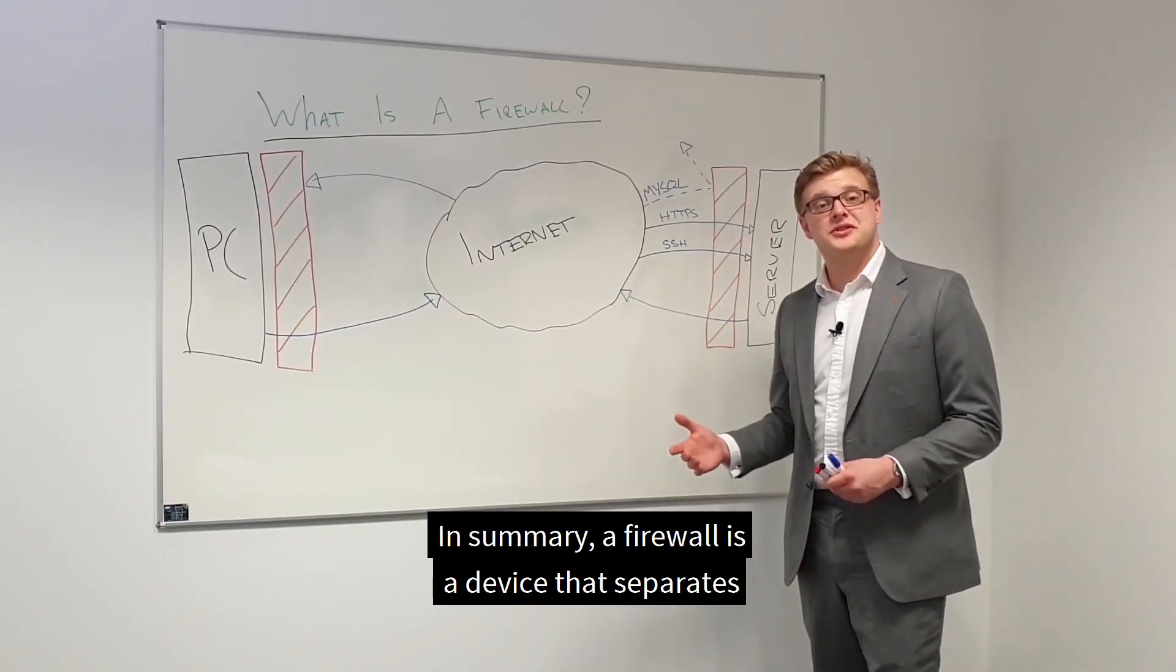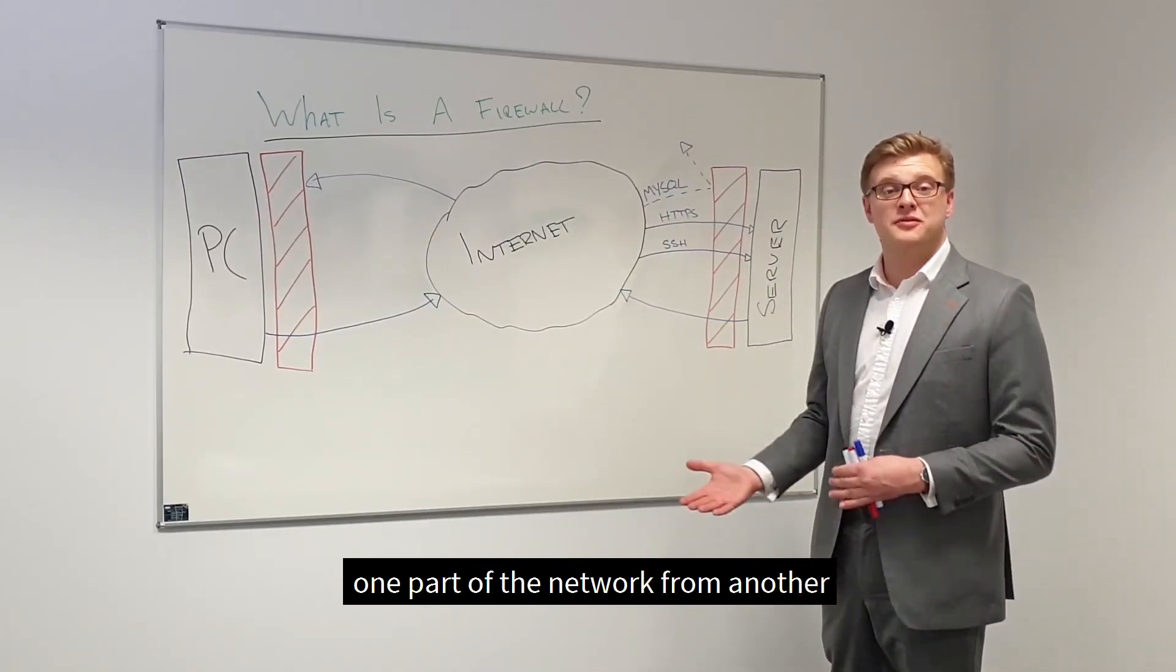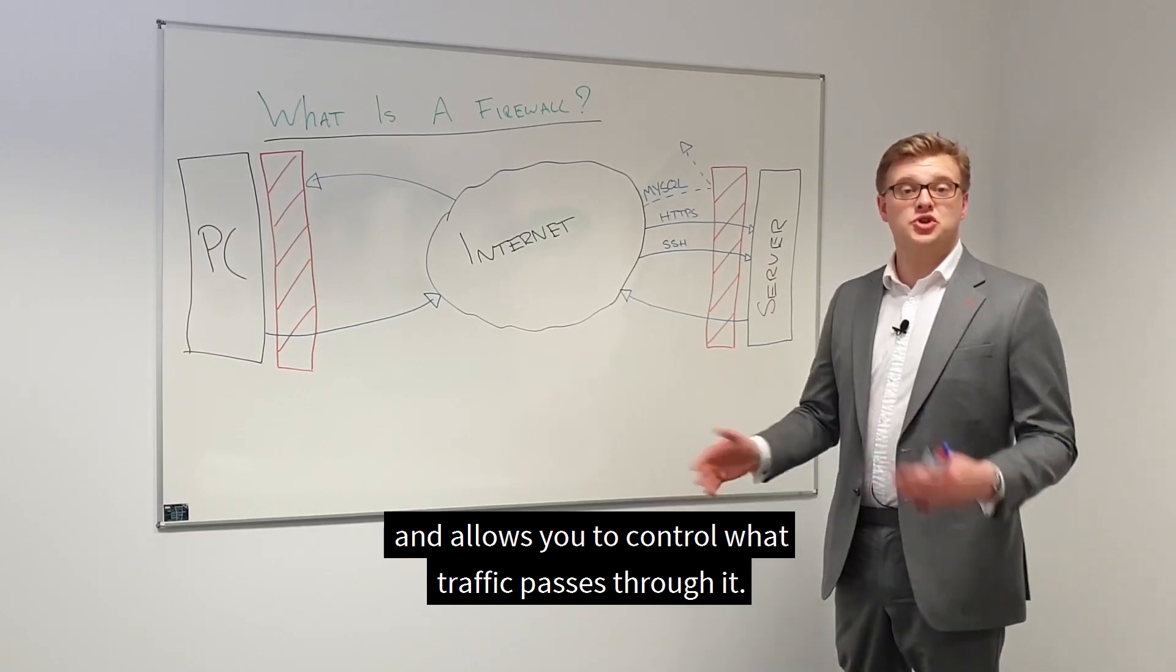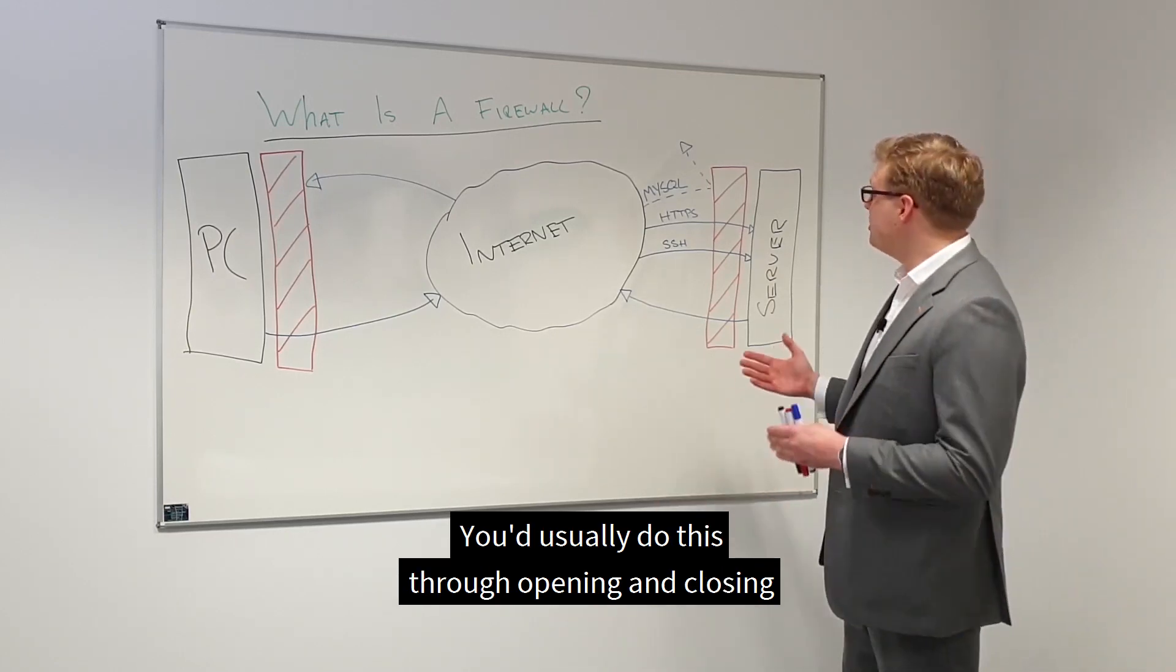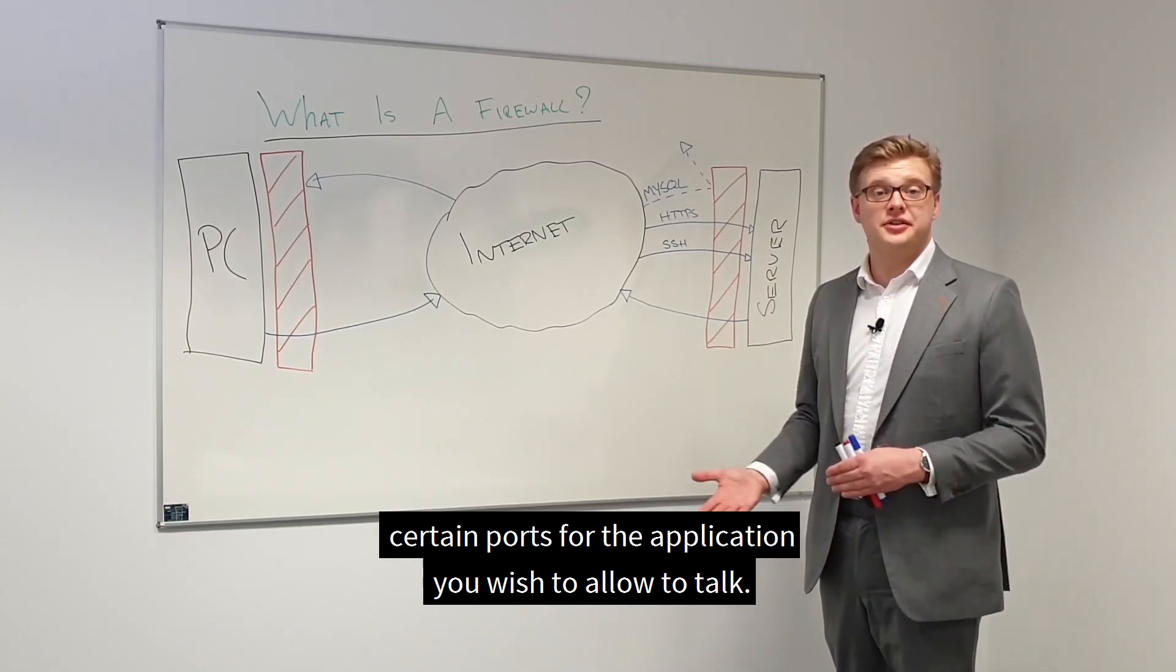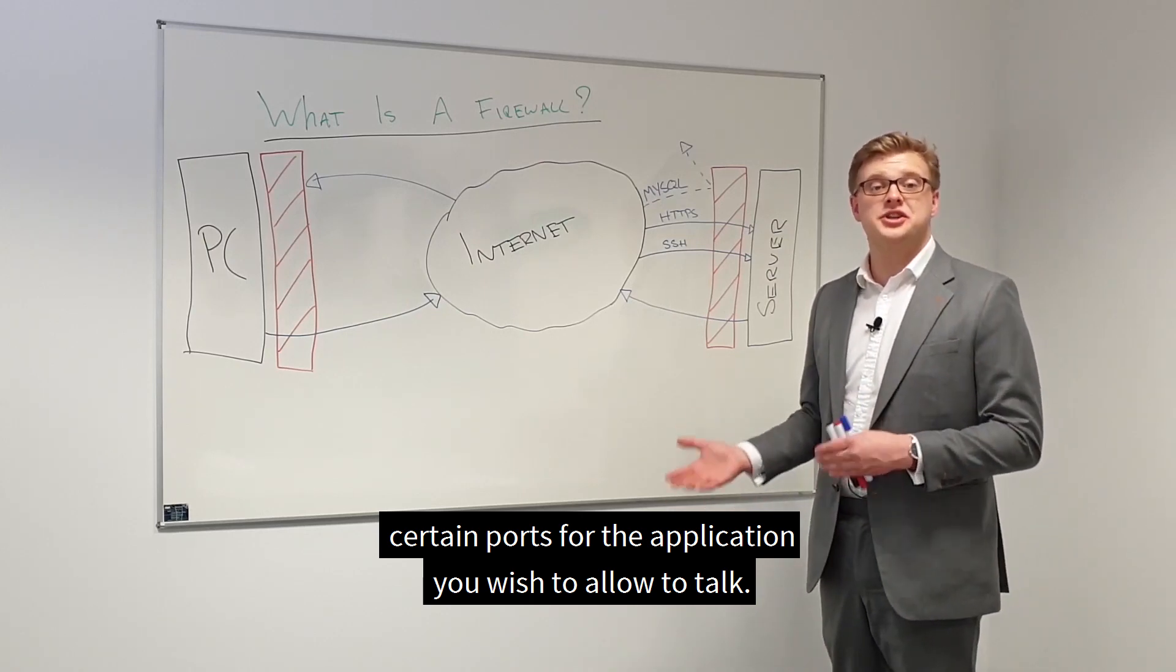In summary, a firewall is a device that separates one part of the network from another and allows you to control what traffic passes through it. You can usually do this through opening and closing certain ports for the applications you wish to allow to talk.